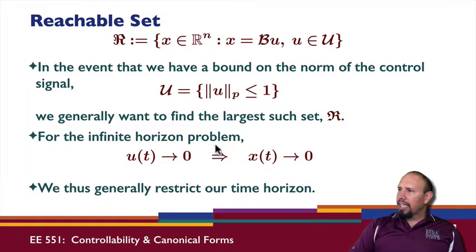In general, we could also look at the infinite horizon problem. But in general, the infinite horizon problem is such that in order for U to have finite P norm, U has to go to 0 as time goes to infinity. In which case, generally speaking, at least for a stable system, X has to go to 0. So in general, for the reachability set, we restrict our time horizon. Instead of going all the way up to infinity, we're going to stop at some time TF.